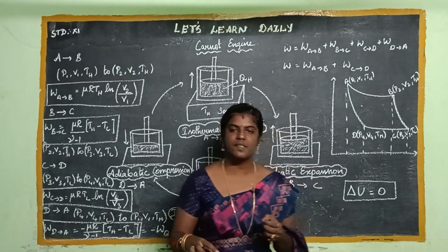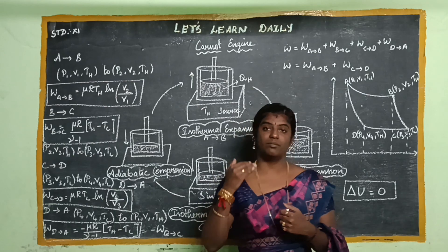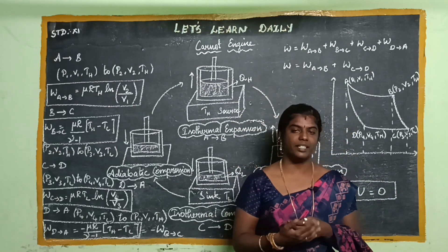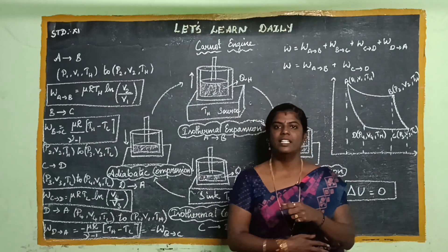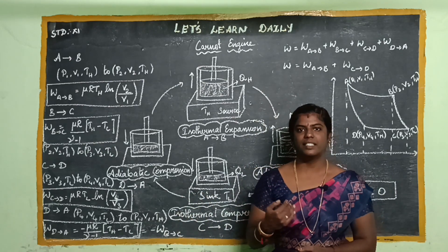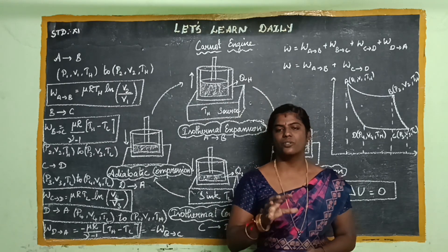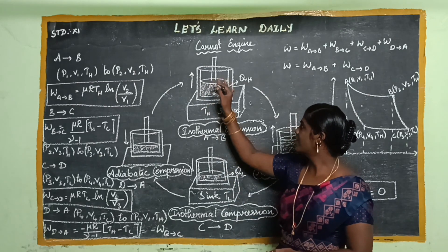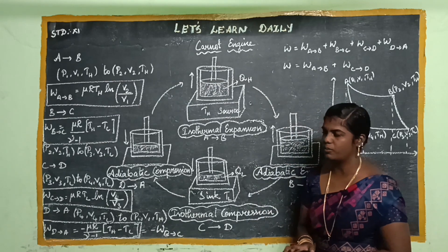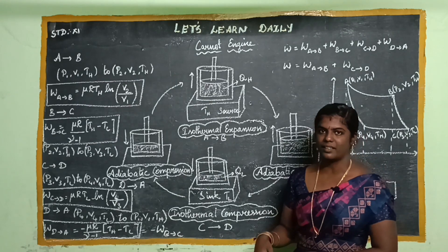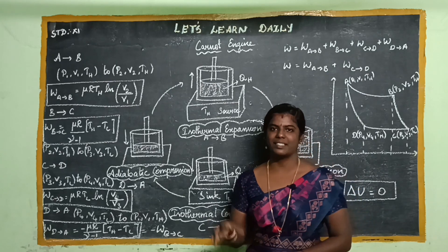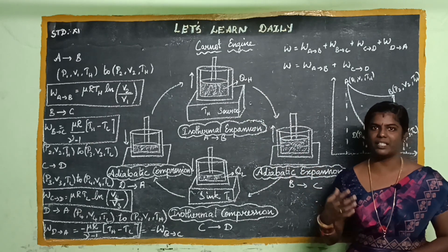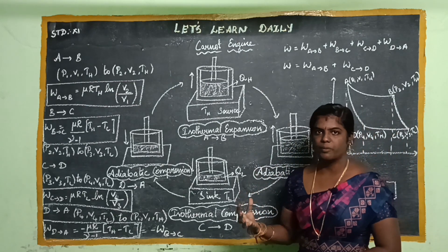We are going to talk about the four steps and their main functions. The source supplies heat at maximum temperature. The insulating stand is connected to the working substance. The working substance is connected with a frictionless piston. The sink is at low temperature; in thermodynamics, it maintains that low temperature. Heat is absorbed from the source and extracted to the sink. There are 4 steps.